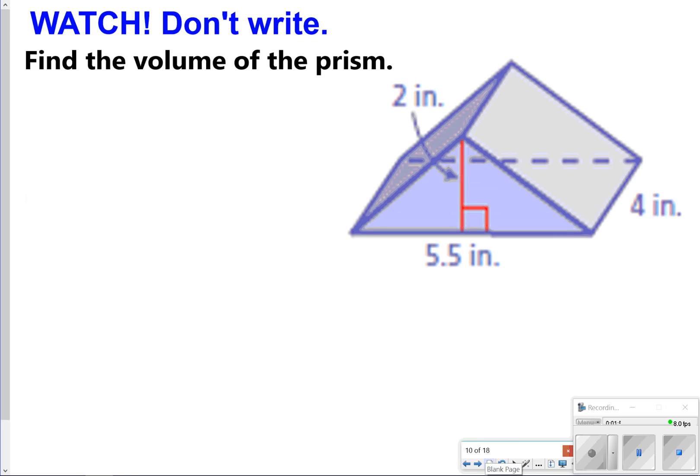The next shape we're going to try is finding the volume of a triangular prism. Again, we're still using the same formula, but instead of just finding the area of a rectangle, we're now finding the area of a triangle. The numbers I'm going to use here for the triangle are 5.5 and 2. Remember, to find the area of a triangle, I have to multiply base times height and then divide it by 2.